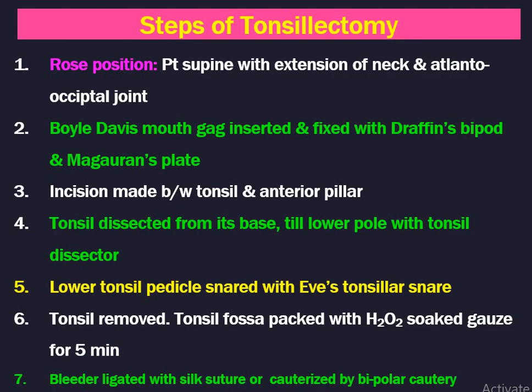The position for tonsillectomy is the Rose position — the patient lies supine with extension of neck at the atlanto-occipital joint. The Boyle-Davis mouth gag is inserted and fixed with Draffin's bipod and Mclvor's plate. Incision is made between the tonsil and the anterior tonsillar pillar. Dissection is started from the upper pole, which is more fibrous tissue. The tonsillar plane is identified and dissection is carried from the upper to the lower pole. The lower tonsillar pedicle is snared with the IFS tonsil snare. The tonsils are removed and the tonsillar fossa is packed with hydrogen peroxide soaked gauze for 5 minutes to stop bleeding.